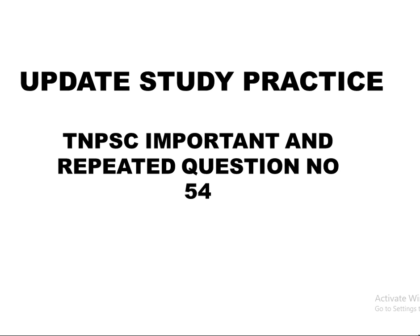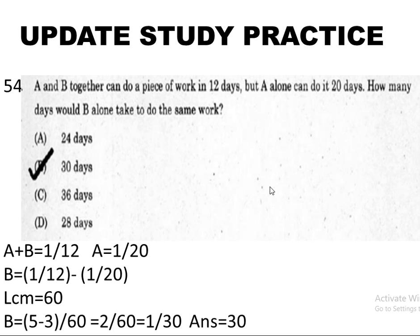This is an important and repeated TNP question number 54. Let's look at it: A and B together can do a piece of work in 12 days, but A alone can do it in 20 days. How many days would B alone take to do the same work?